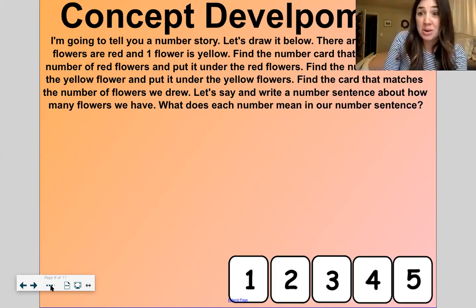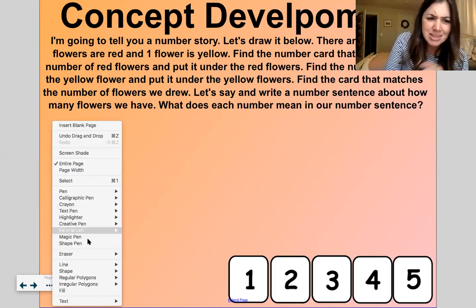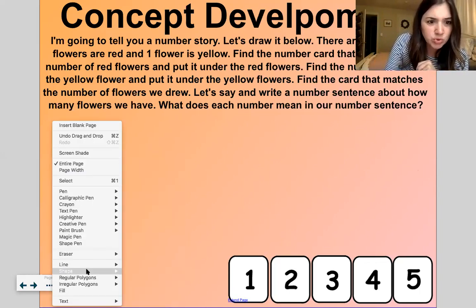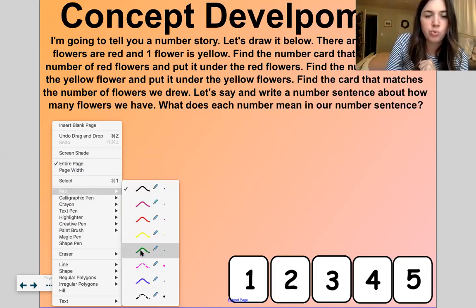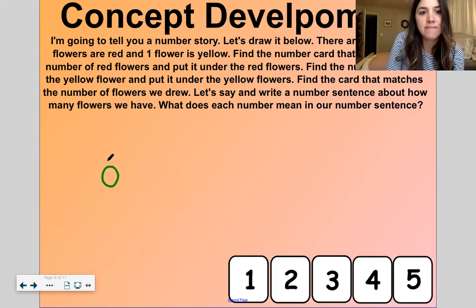So let's draw our number story below. And I get to get out my fancy pen for this. And sometimes my pen's a little tricky to write with. But I'm going to do my best. Let's see. Let's do green. Okay. So let's draw our number story together. And if you don't have something to write with, totally fine. Just watch me. So let's draw three flowers.